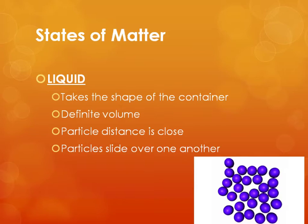As we add energy to the particles, they start to move away from each other and we get a liquid. Liquids take the shape of whatever container they're in — if I put a liquid into a water bottle, it's going to take the shape of the water bottle. It does have a definite volume, so water poured from a water bottle into a bathtub won't fill the whole tub — just a short layer over the bottom. Particle distance is close, but not quite as close as it is for a solid, and there's a little bit of space for the particles to slide over one another.